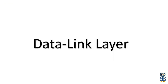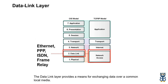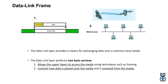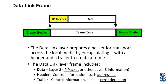Let's move ahead to the Data Link Layer. The data link layer provides a means for exchanging data over a common local media. Data link layer protocols govern how to format a frame for use on different media, and different protocols may be in use for different media. The data link layer connects the network layer with the physical layer. It performs two basic services: first, it allows upper layers to access the media using techniques such as framing; second, it controls how data is placed onto the media and received from the media. The data link layer prepares a packet for transport across local media by encapsulating it with a header and a trailer to create a frame.